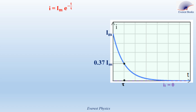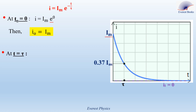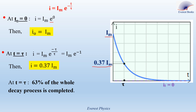Now let's determine particular values of the current at specific instances. At t = 0: i(0) = Im · e^0 = Im · 1 = Im — the current starts at its maximum during decay. At t = τ: i(τ) = Im · e^(−τ/τ) = Im · e^(−1) ≈ 0.37·Im. This means at t = τ, 63% of the whole decay process is completed, or the value of the current equals 37% of its maximum value.